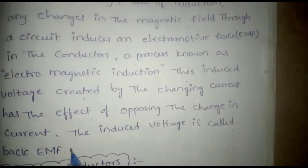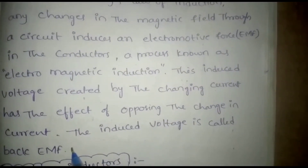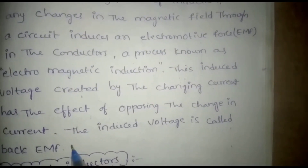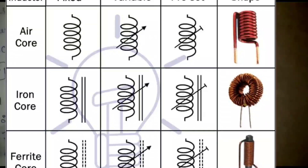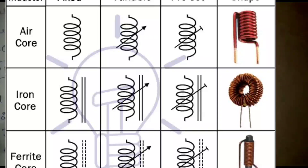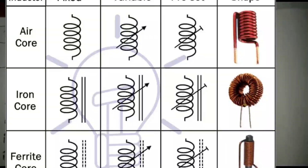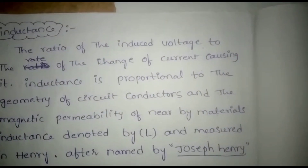Now discussing about the types of inductors: first, iron core inductors; second, air core inductors; third, iron powder inductors; fourth, ferrite core inductors.